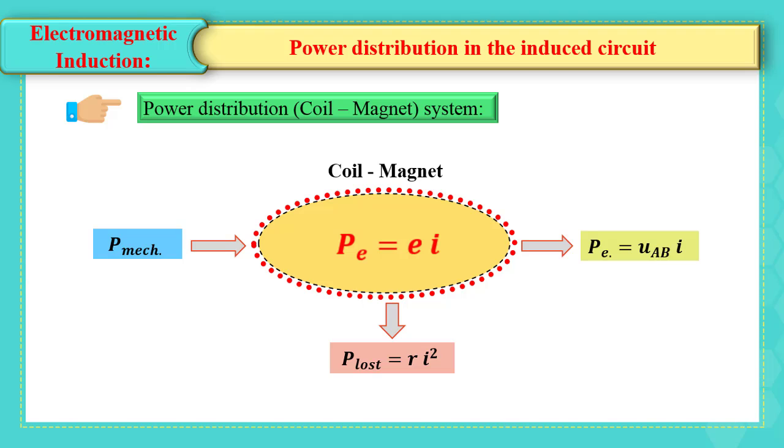This represents the electric energy in the circuit, and to P lost equals Ri squared, which appears as heat due to the resistance of the system.